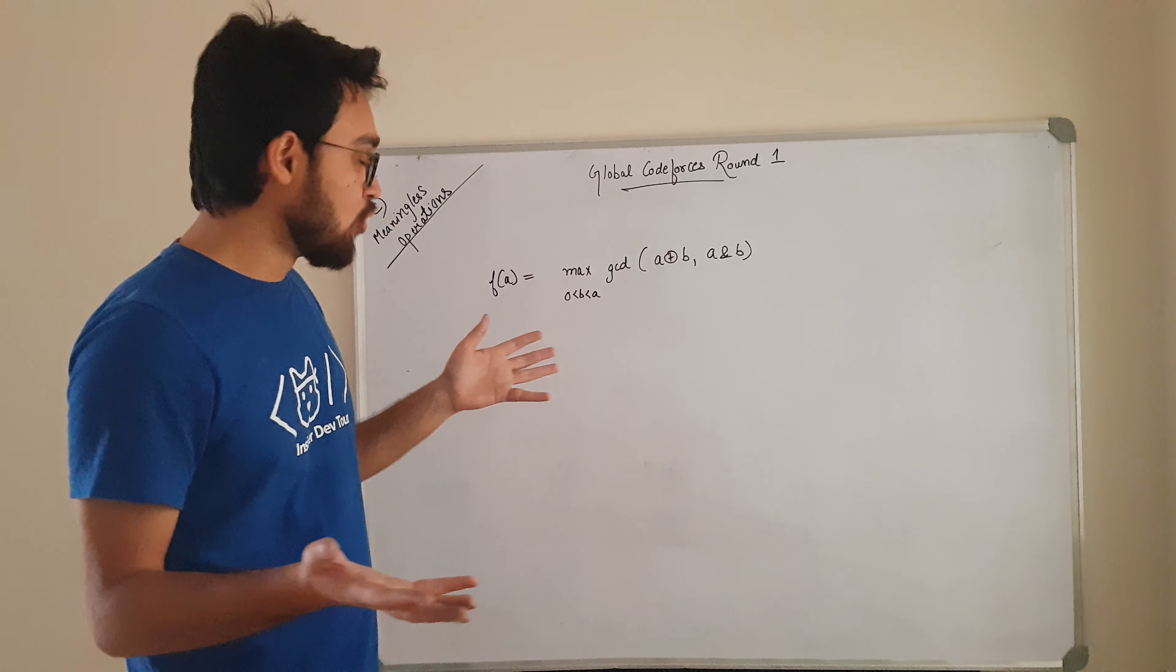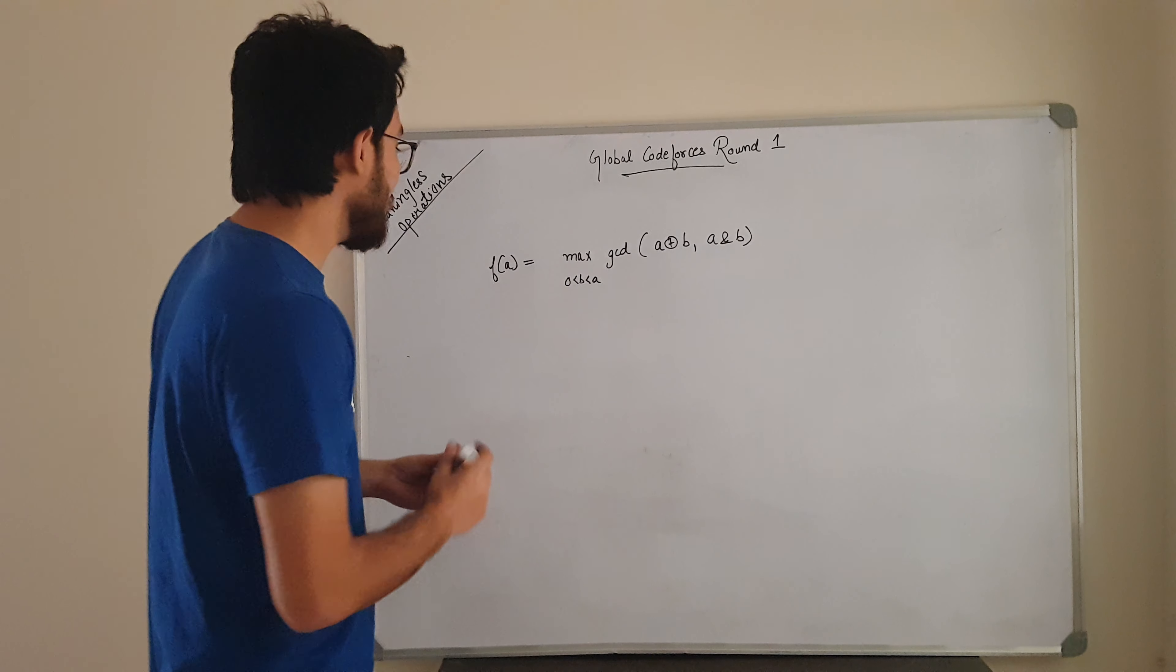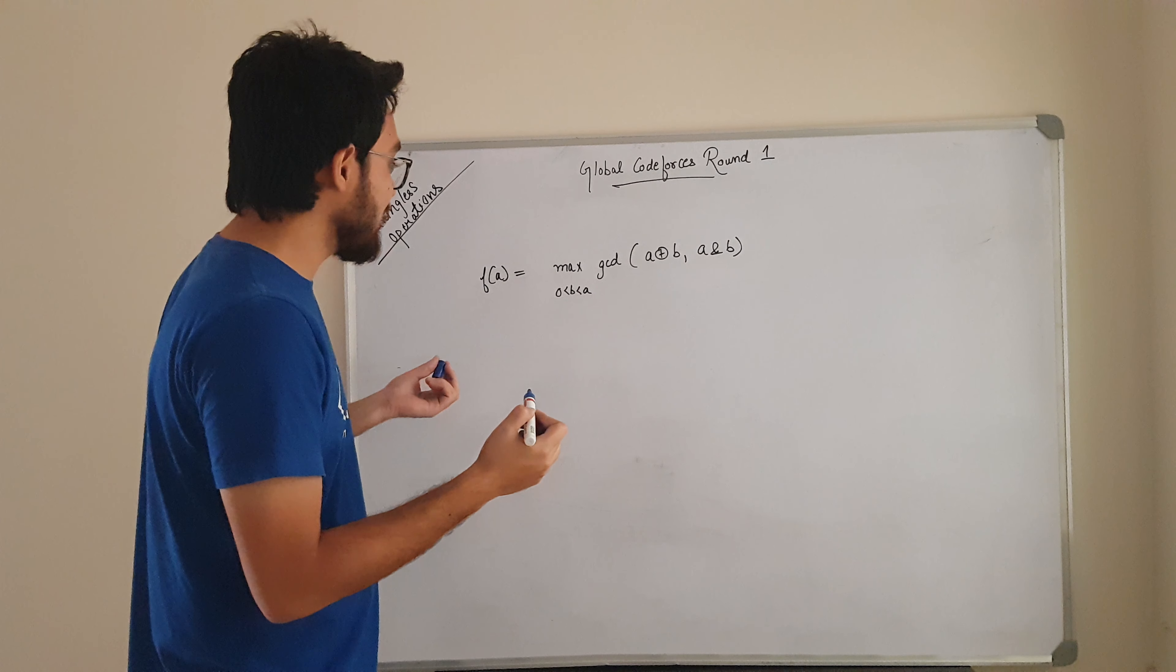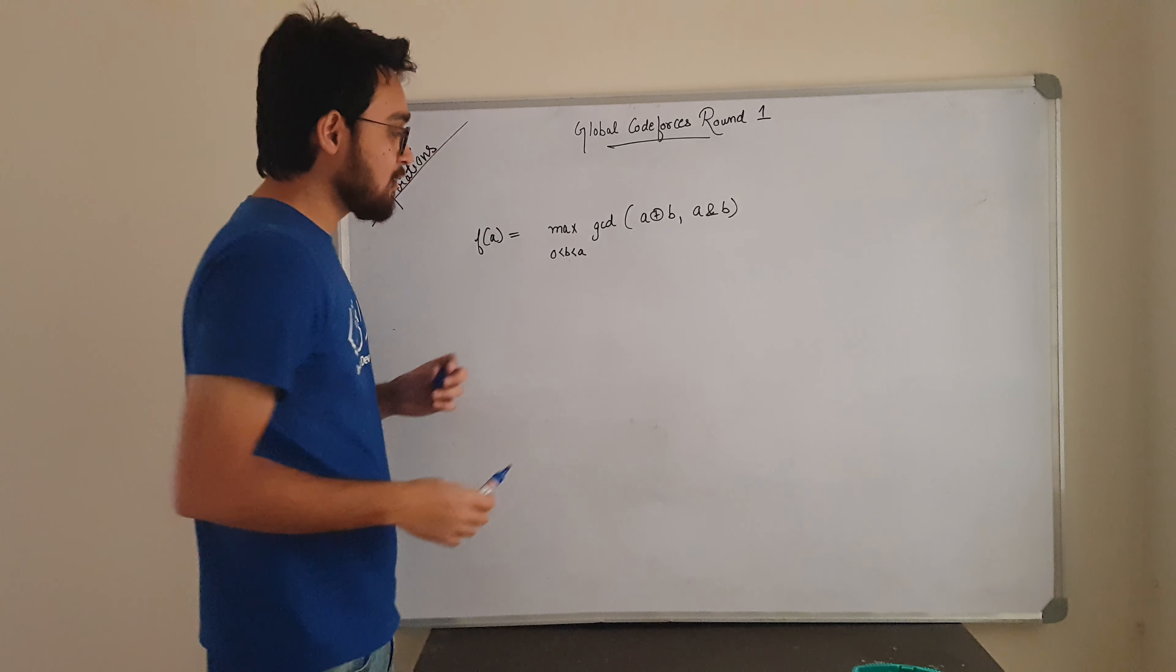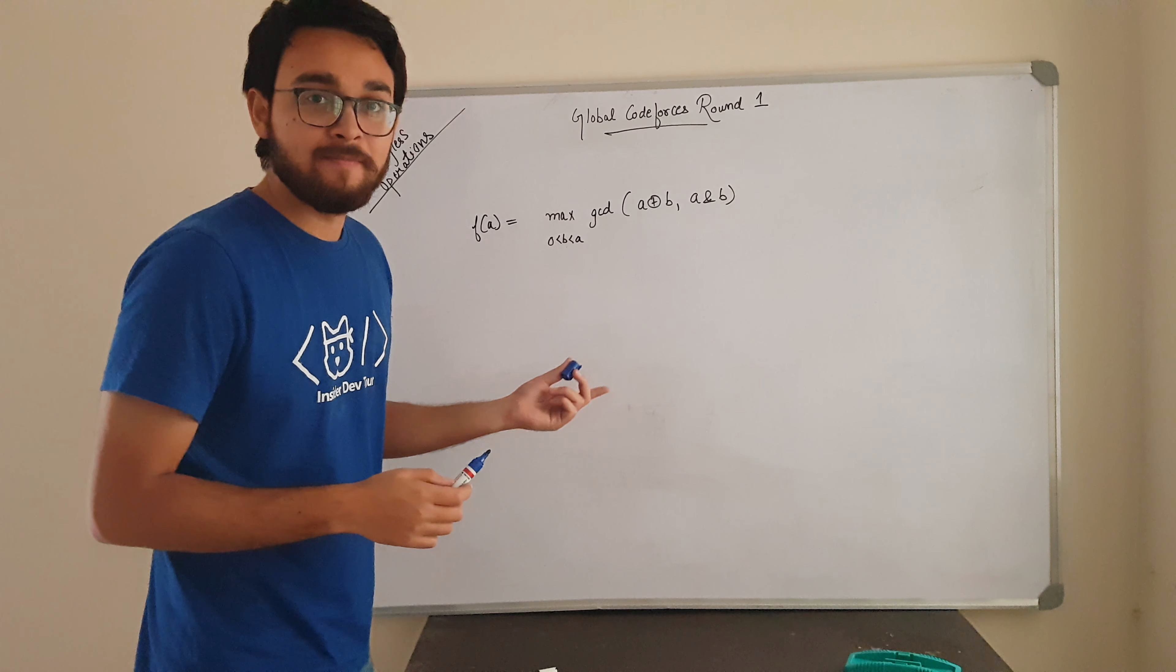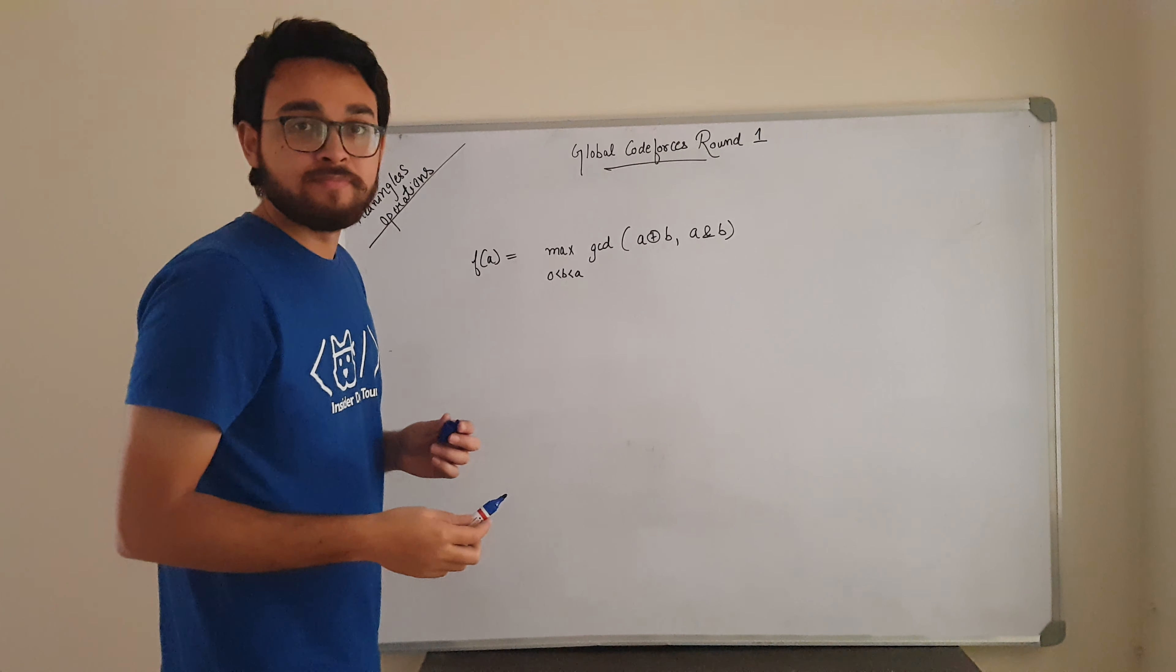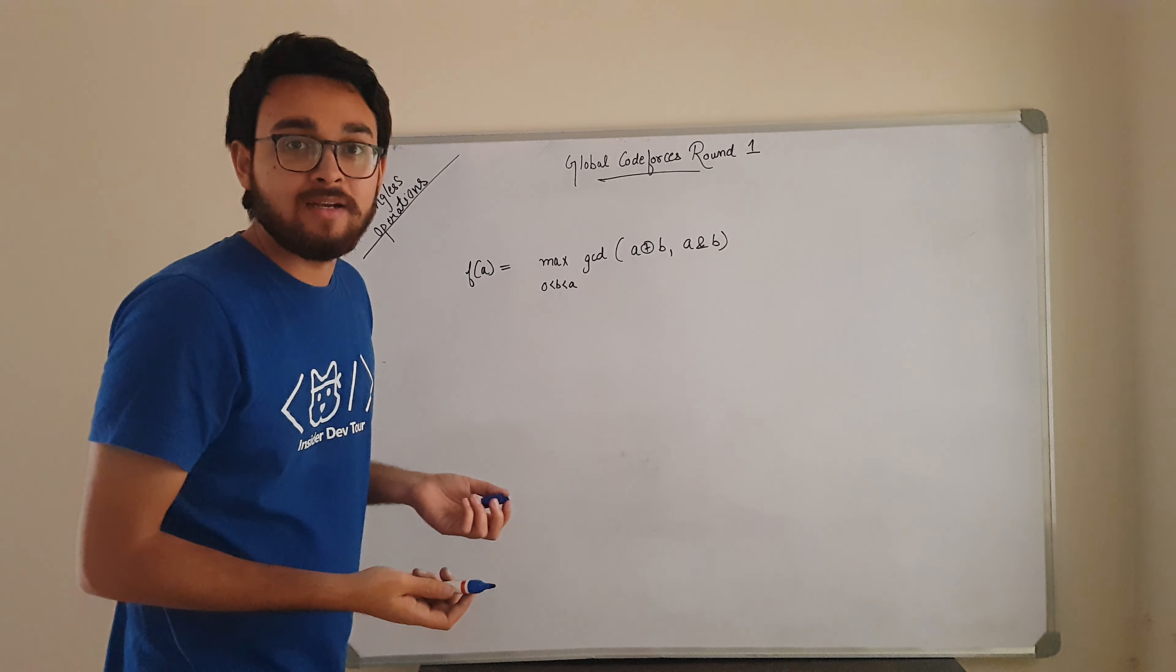So what the problem wants you to do is, you are given a number A, and you need to calculate this function F of A. What is this function? Take any number B which is greater than 0 and less than A, and calculate A XOR B and A AND B. Find the GCD of those two numbers and return the maximum of that.